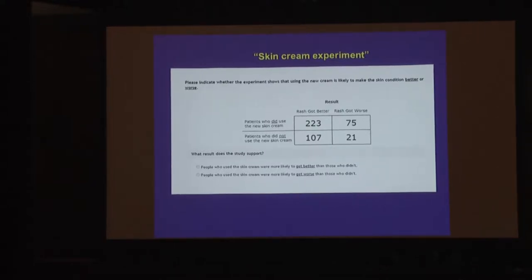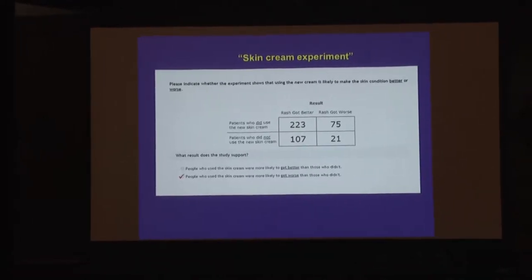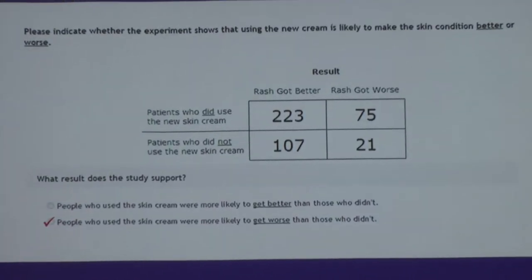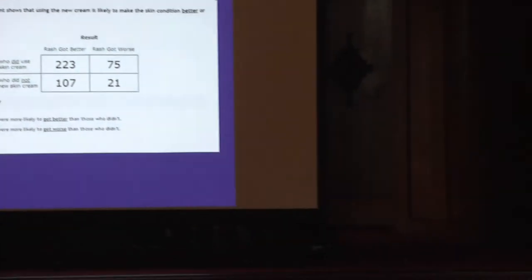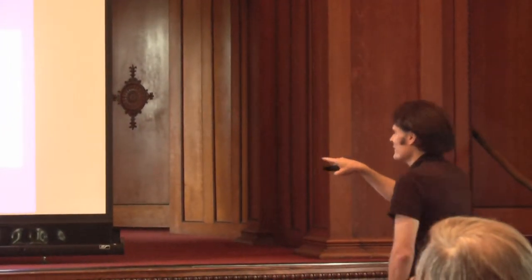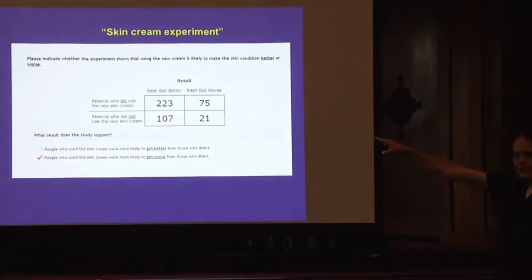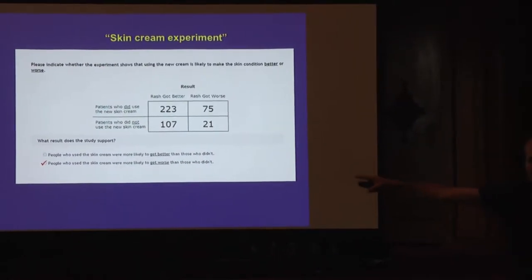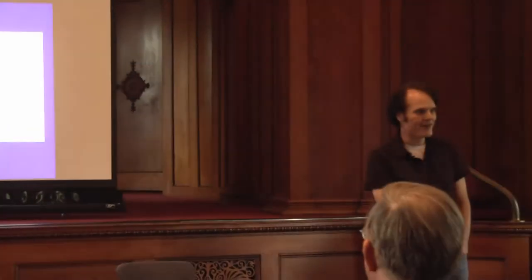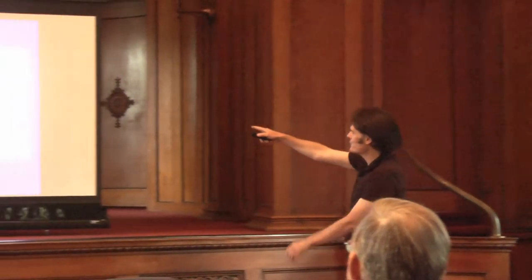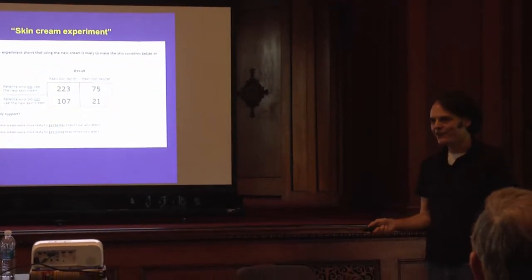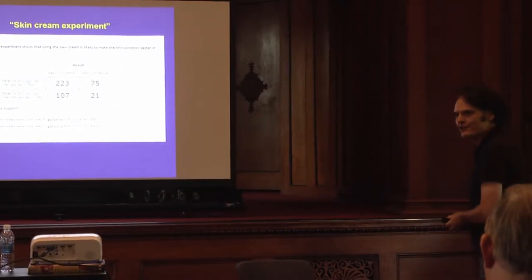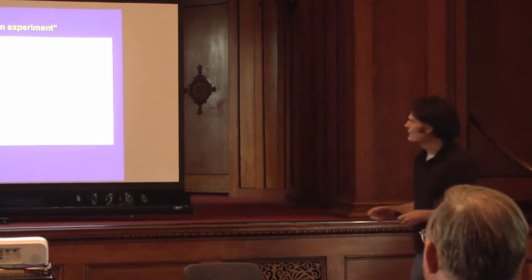You're probably getting the right answer instantly: people who use the skin cream are more likely to get worse than those who didn't. But people actually have a hard time understanding the two-by-two contingency table. People use a heuristic — if 223 got better and only 75 got worse in the treatment group, it must be working. Or a friend says, well 223 got better in the treatment versus 107 in the control, so it works. But even that isn't enough — you have to use all of the information to figure out the impact of the intervention.